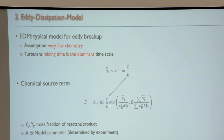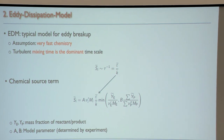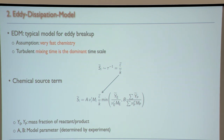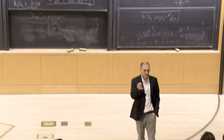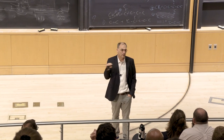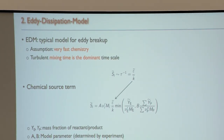In the Magnussen model, the source term is proportional to the minimum of the reactant and product mass fractions. If there's no oxygen, the reaction rate is zero. If there's no fuel, also zero. Before auto-ignition, you have fuel and oxygen but no product, so the reaction rate is also zero — auto-ignition is handled by a separate ignition model.